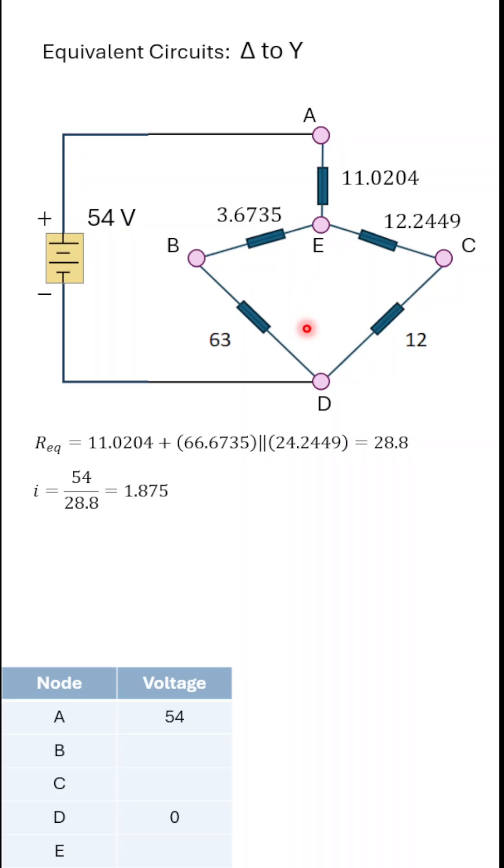At this point, we can use series and parallel combinations. We have a series part here and here. Now, those two results are in parallel, and that result is then in series with the 11.02 ohms. So we get an equivalent resistance of 28.8 ohms, and we can take the 54 volts divided by that equivalent resistance to get the total current, 1.875 amps.